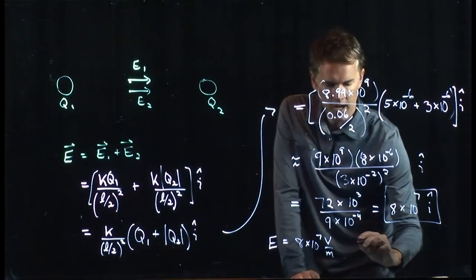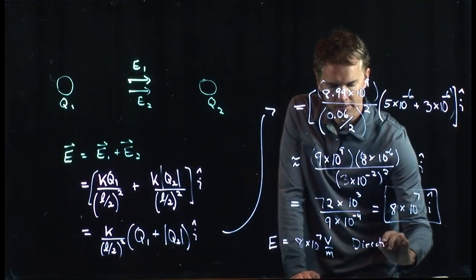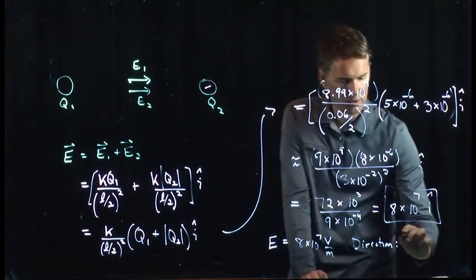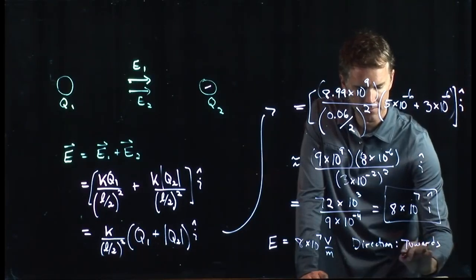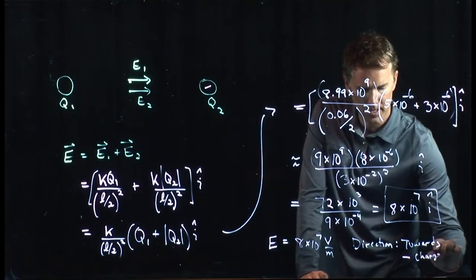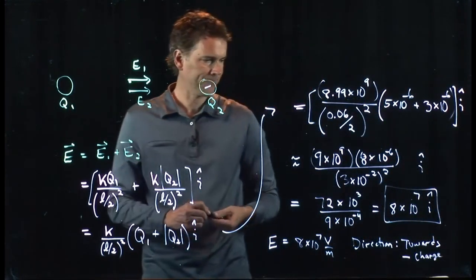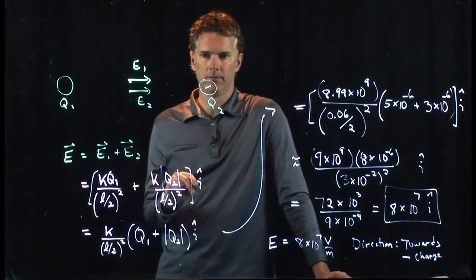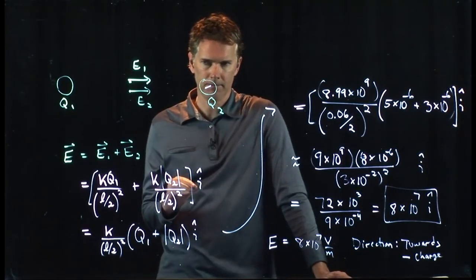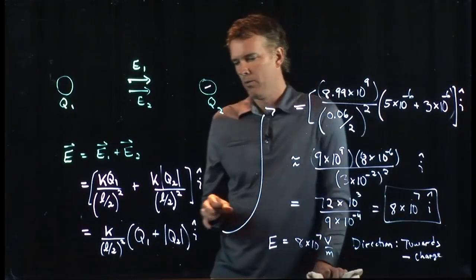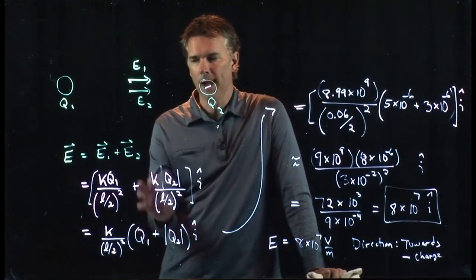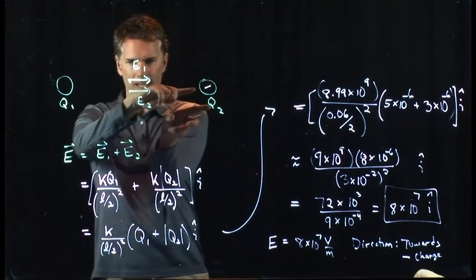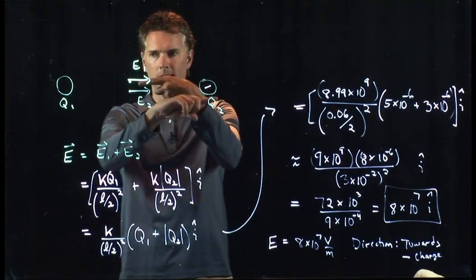And the direction is i hat, which in our picture is towards the negative charge. That's the direction. Good one. Any questions about that? Not too bad? Don't get too wrapped up with the signs. Always go back to your picture for the vectors. That'll tell you if you should be adding them or you should be subtracting them. Go back to your picture of the vectors themselves.